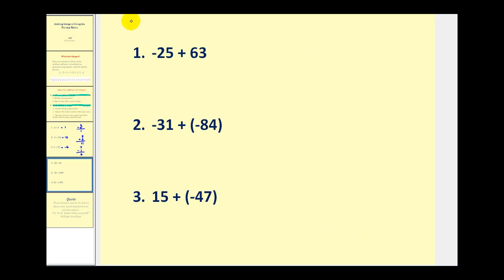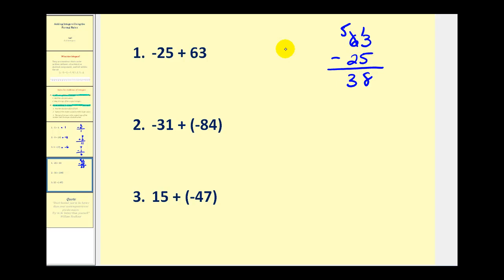Let's try a few more. Negative twenty-five plus sixty-three — one's negative and one's positive, so once we find the absolute values we'll have to subtract. The absolute value of negative twenty-five is twenty-five, and the absolute value of sixty-three is sixty-three. Notice I always write the larger number on top because I know since they have different signs I'll have to subtract. Let's borrow — thirteen minus five is eight, five minus two is three. So our sum will be thirty-eight, and it will be positive thirty-eight because sixty-three is the bigger number and it's positive.